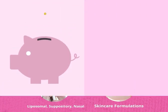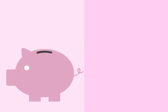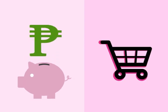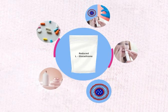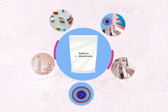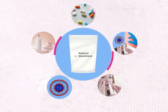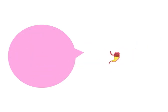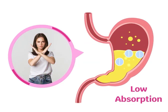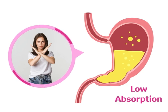It is super cost effective compared to the other type and can be easily accessible. The pros of reduced L-glutathione are its cost efficiency and its broad use. Unfortunately, it has one con, which is when it comes to oral administration — reduced L-glutathione gets depleted by the stomach acids in the digestive tract once ingested through the mouth, so its absorption is pretty low.